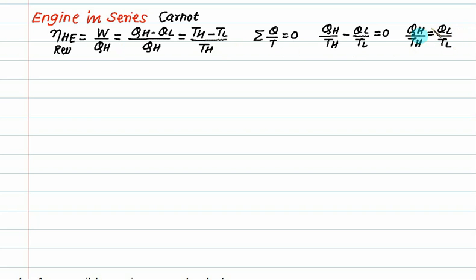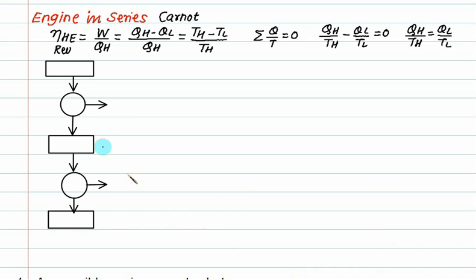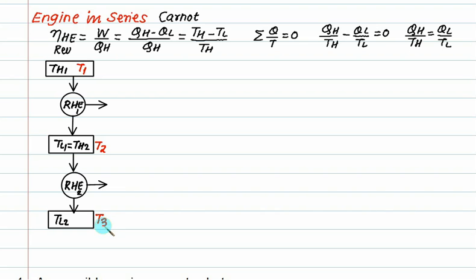We have equation one and equation two. Now let's consider two engines in series. Reversible heat engine one has source temperature T_H and sink temperature T_L1. T_L1 is the same as T_H2 for the second engine, and T_L2 is the lowest temperature. We label these as T1 (high), T2 (intermediate), and T3 (low). Work produced by engine one is W1 and by engine two is W2.